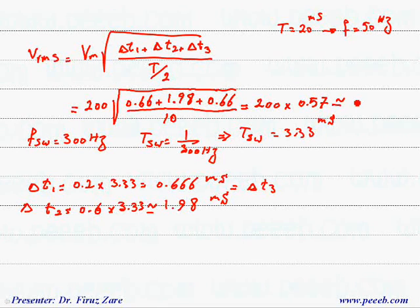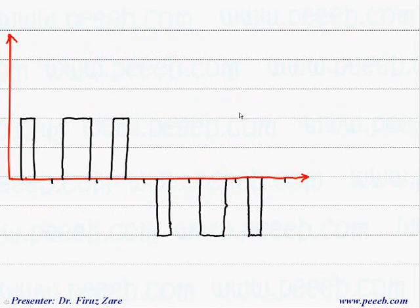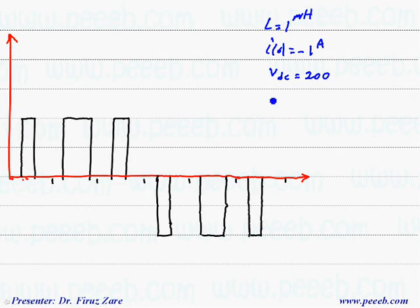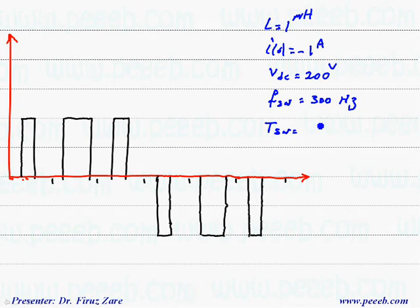In the next section, we have to sketch the load current assuming the inductance value is 1 millihenry and the initial load current is minus 1 amp. Because the DC voltage is 200 volts, we can find the current waveform. The switching frequency is 300 Hz and the switching cycle is 1 over the switching frequency, which equals approximately 3.3 milliseconds.